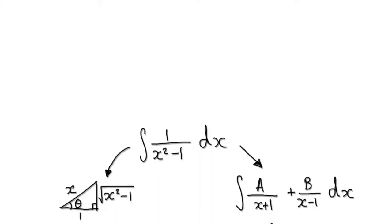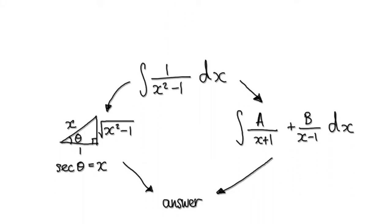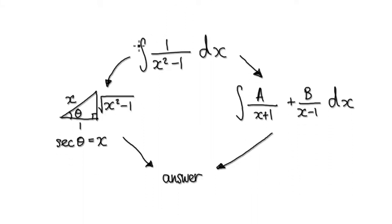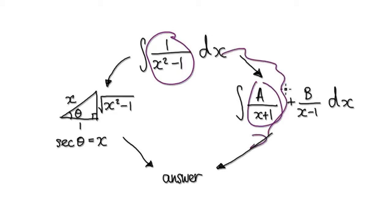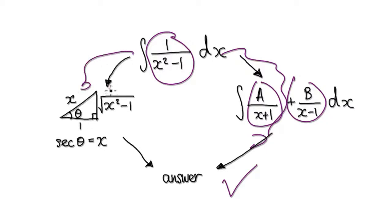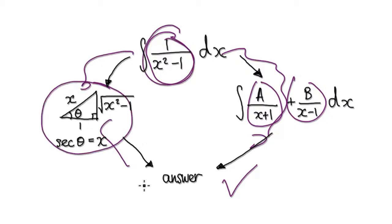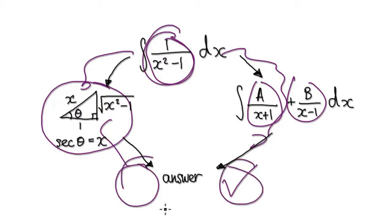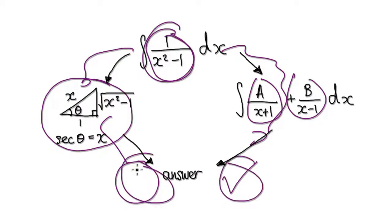Following on from the previous video, we were trying to integrate this. In the previous video, we used the partial fractions method and got to the answer. In this video, we're going to use trigonometric substitution to integrate this, and then compare the two answers. So let's start.